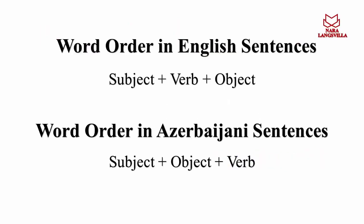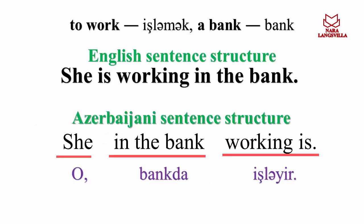Word order in English sentences: subject plus verb plus object. Word order in Azerbaijani sentences: subject plus object plus verb. Examples: To work — işləmək.